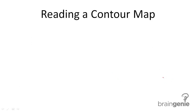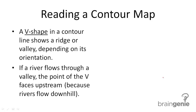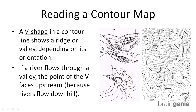A V shape in a contour line shows a ridge or a valley depending on its orientation. If a river flows through a valley, the point of the V faces upstream. So here we have some V shapes and these are pointed upstream, which means that the river is flowing down it. This is what this looks like from above and this is the contour map of it.